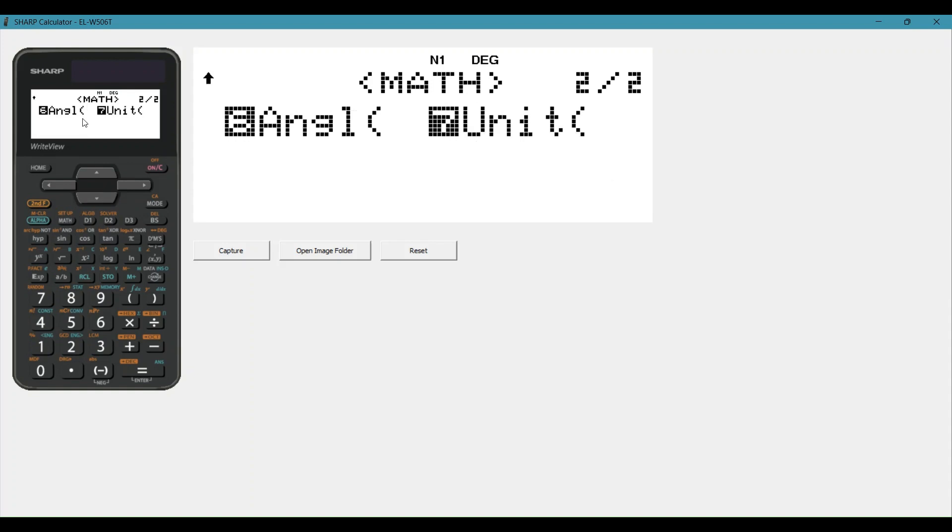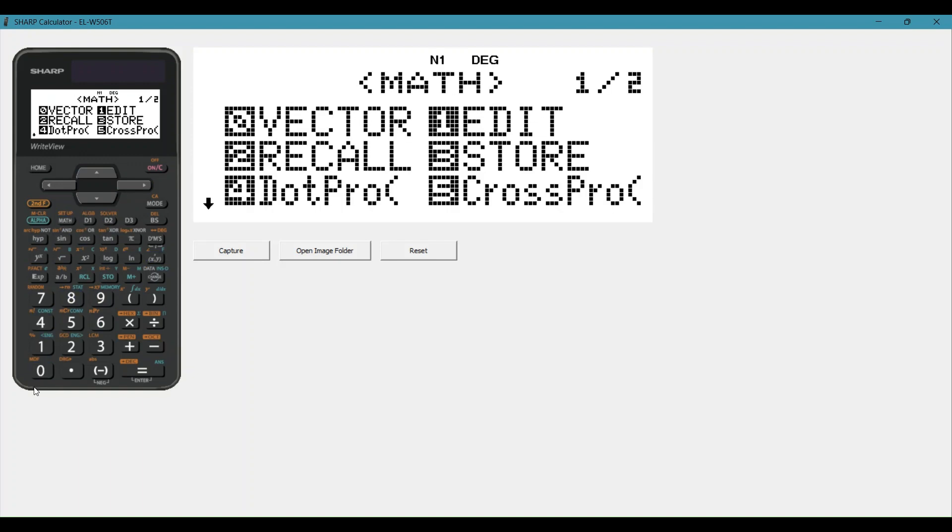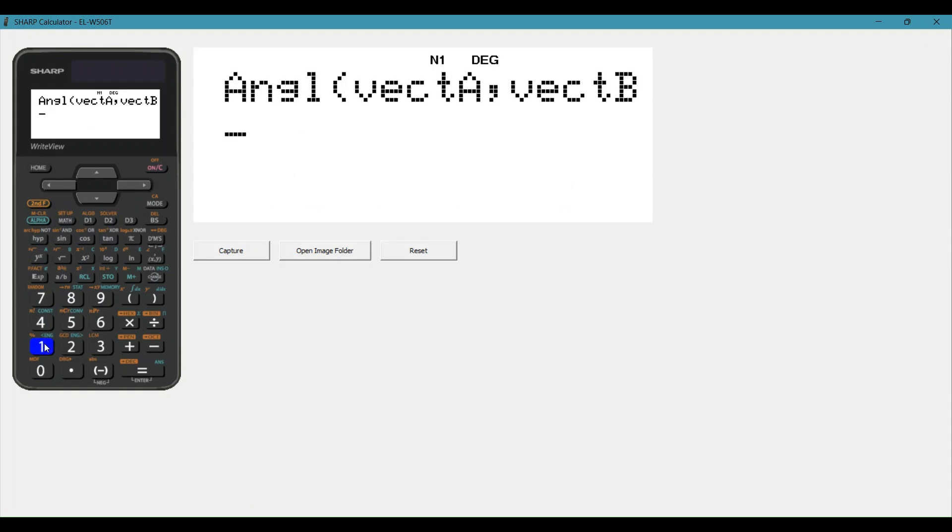Now that we've done that, we can find our angles. We're going to say math, and 6 for angle, vector one which we've saved, our x comma y brackets button, and then again find vector B which we haven't saved a shortcut for, and equals. Our angle is 19 degrees, and you can see it's degrees because we've got our degrees sign at the top there.